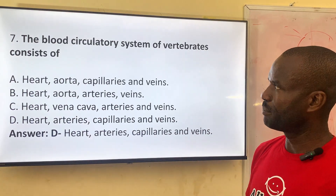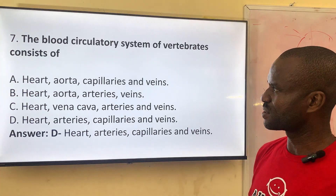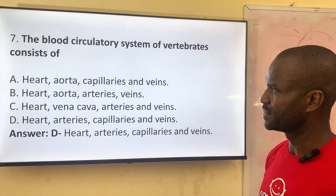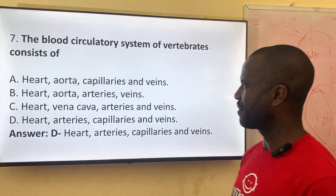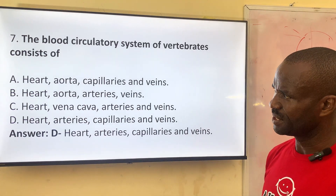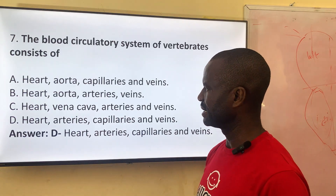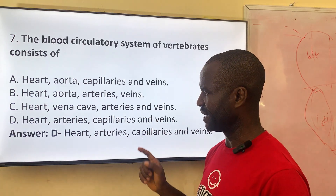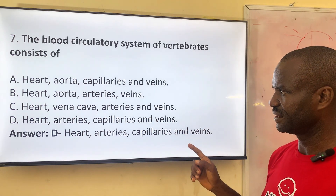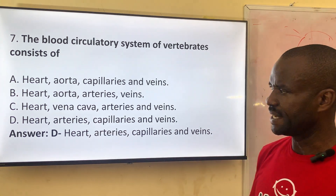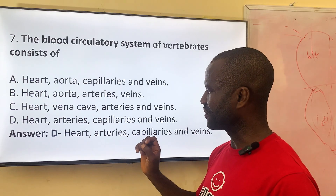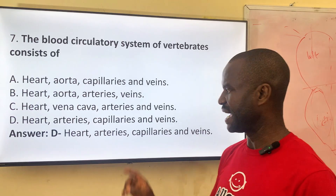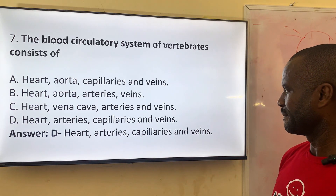Question seven: the blood circulation system of vertebrates consists of — Option A: the heart, the aorta, the capillary and the vein. Option B: the heart, the aorta, the arteries and the vein. Option C: the heart, the vena cava, the arteries and the veins. The correct answer consists of the heart, arteries and the capillaries.